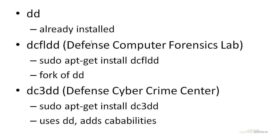You can see that the Defense Computer Forensics Lab has actually taken the source code and forked it — they basically took the source code and wrote their own application based off of it. You can see the DCFLDD, the Defense Computer Forensics Lab's version of DD. It is not installed on Ubuntu by default; however, running the sudo apt-get install dcfldd command will install it. There are definitely some improvements for forensic work: it is much faster, it gives you the ability for hashing, and even the ability to take images into multiple parts.